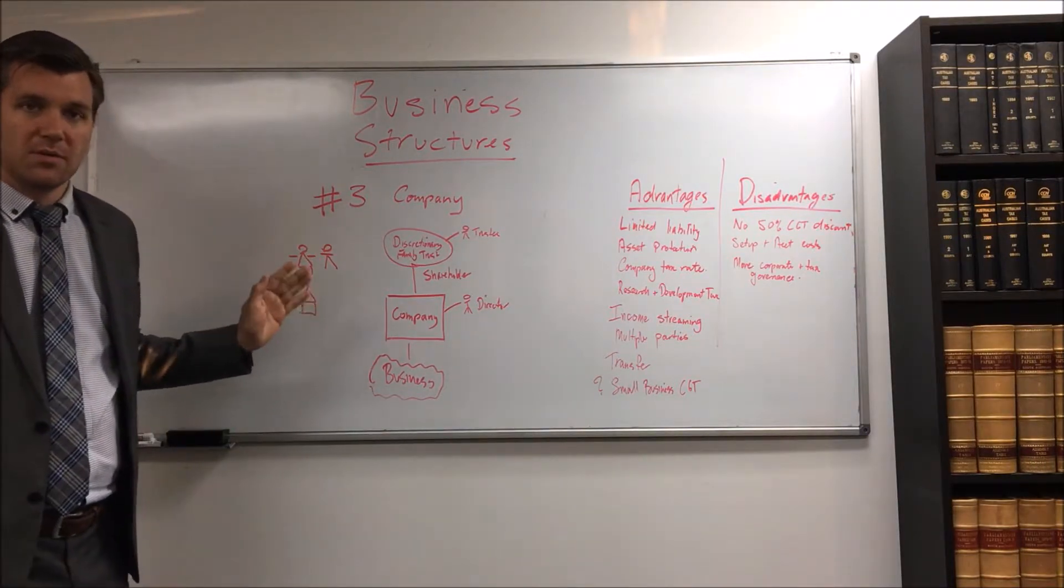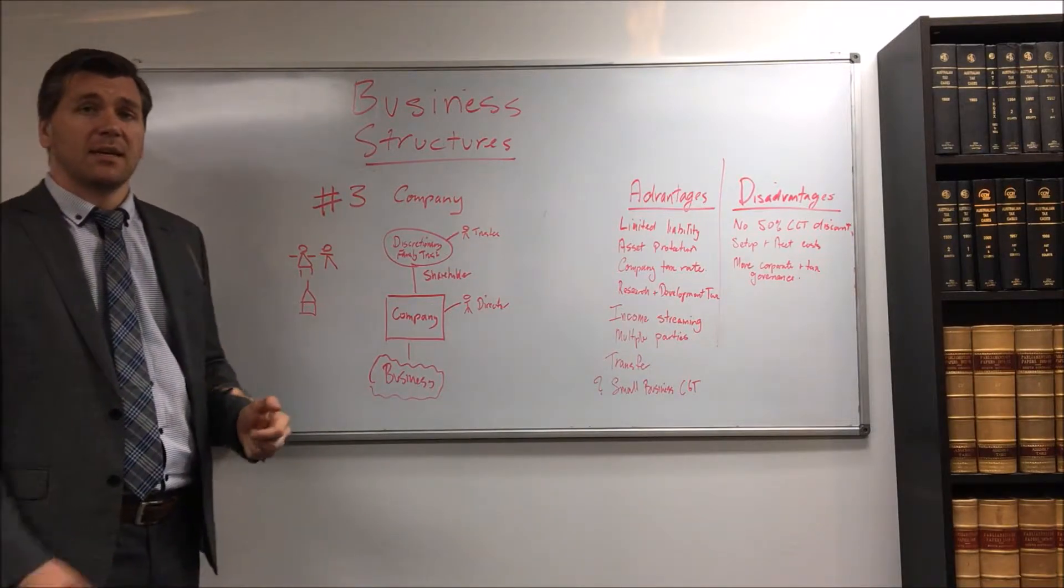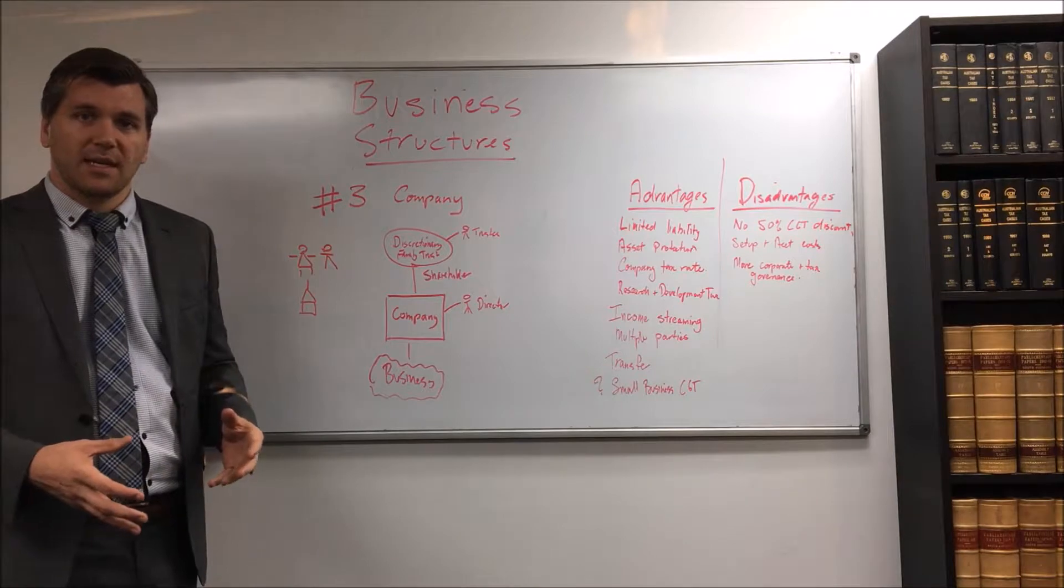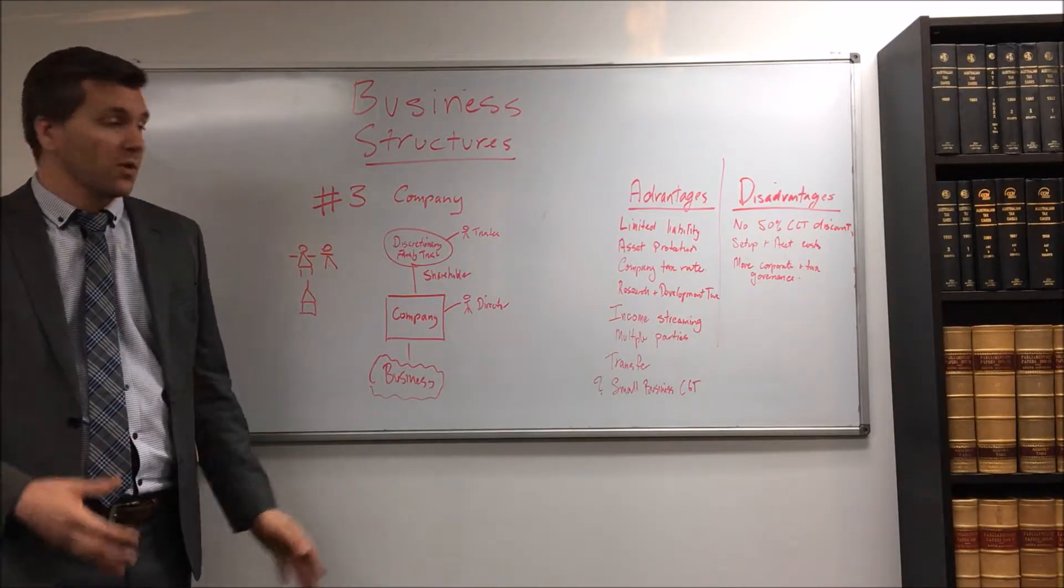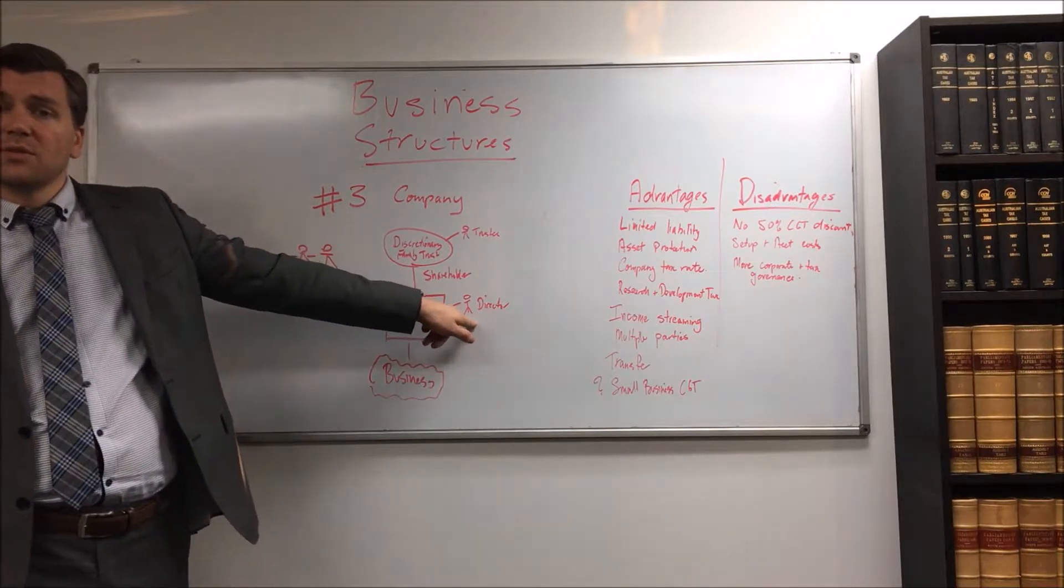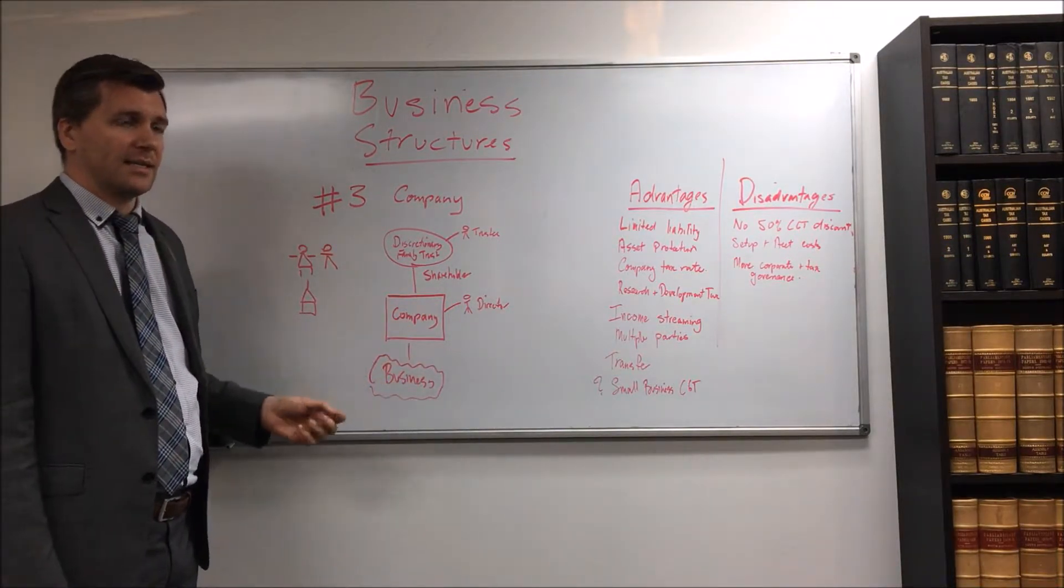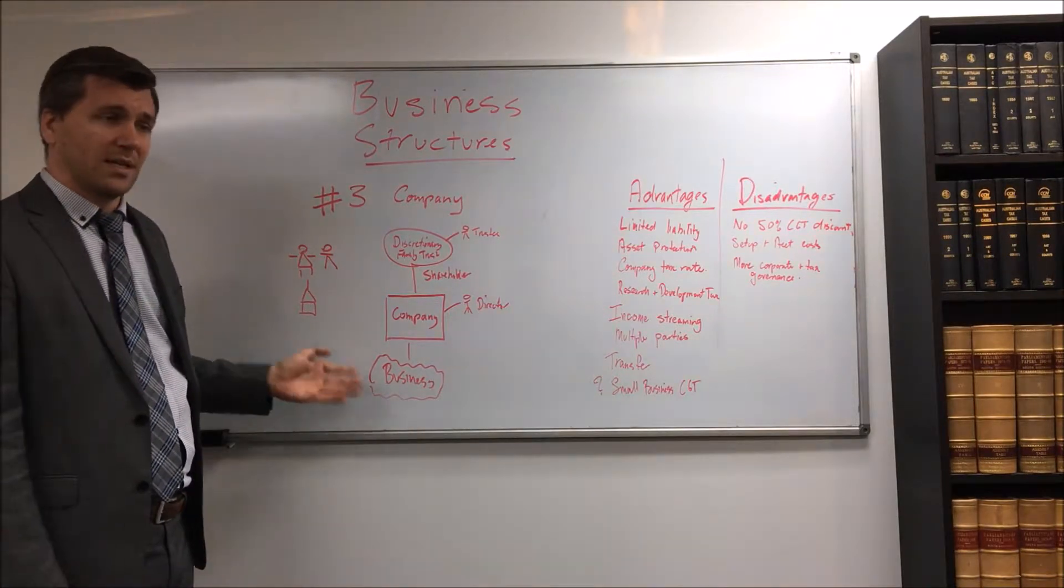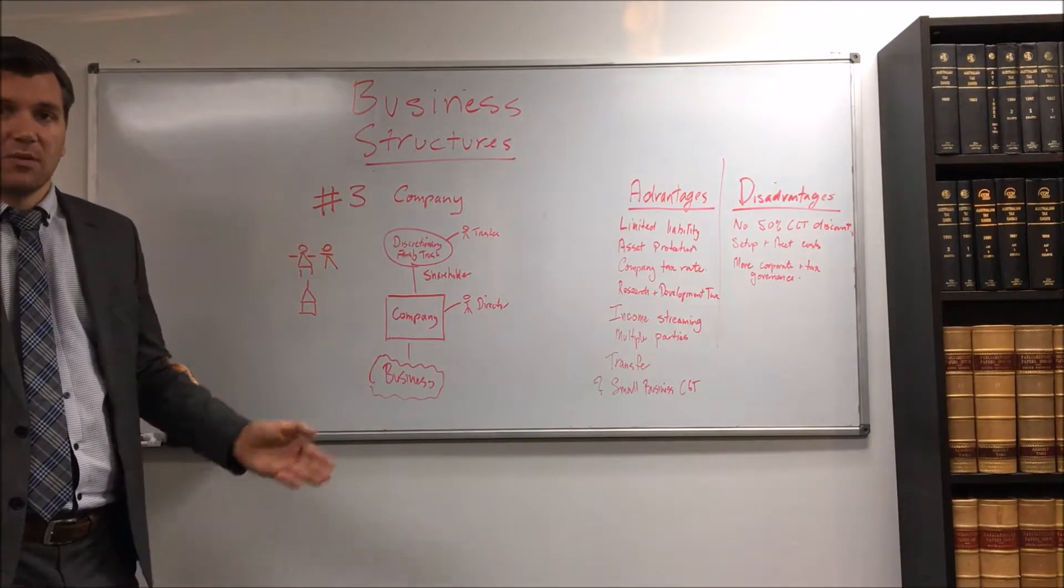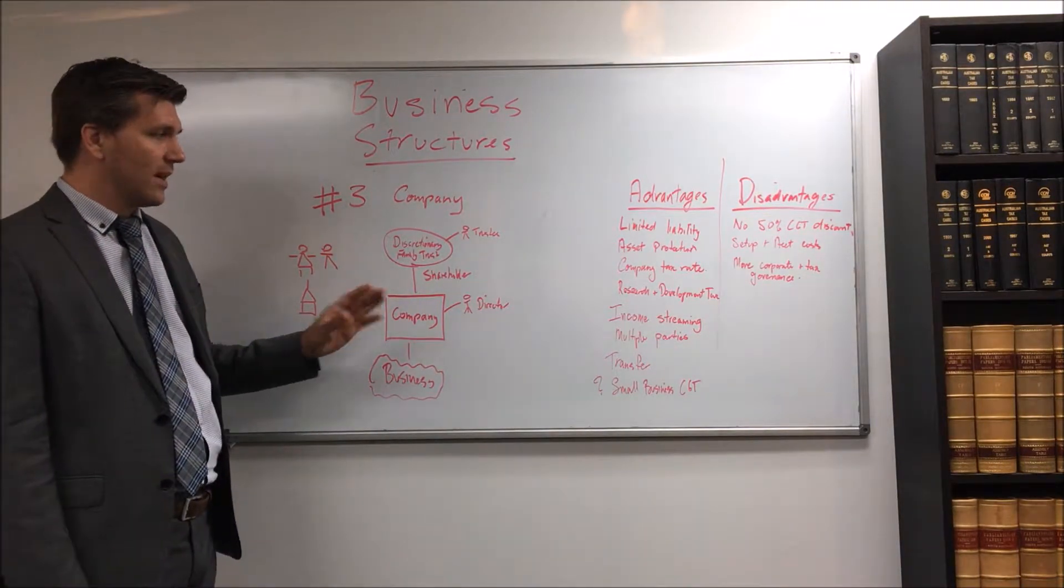Now there are ways of getting past that limited liability. So for example if there is unpaid GST, PAYG, super, the ATO can issue a director's penalty notice to the director and then they could be held personally liable unless they put the company into administration quickly and assuming that all of your BAS obligations are up to date.